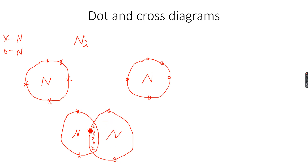And then for the one on the left: one, two, three, four, five, six, seven and eight — complete again. So you can see that in each case we have completed the octet. This is correct. The dot and cross diagram is correct.